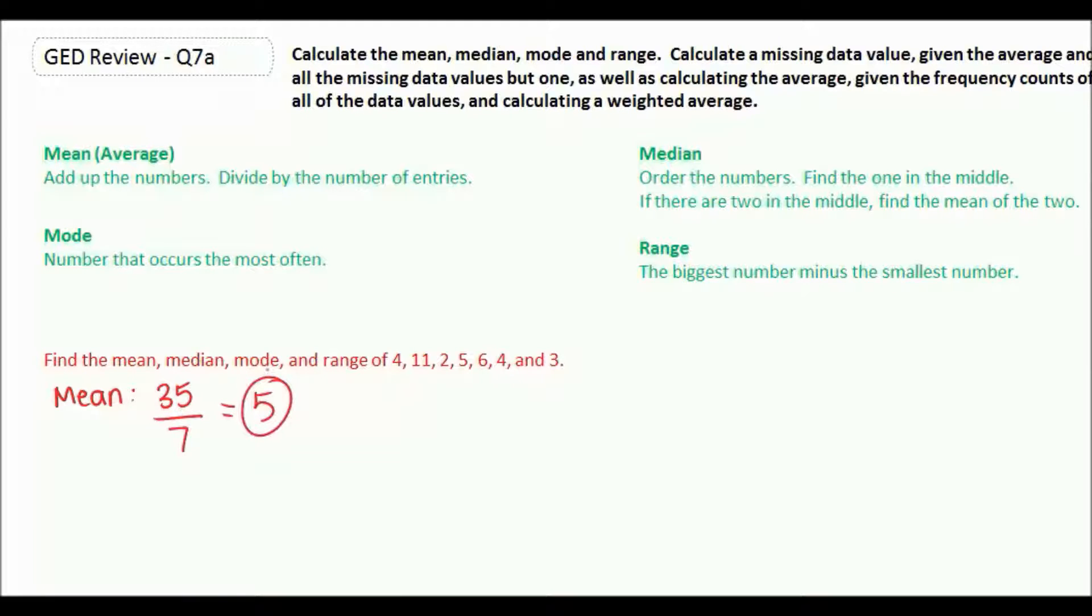For median, we're going to put our numbers in order. So our smallest number is 2, then 3, and 2 fours, then a 5, a 6, and 11. A lot of people like to cross numbers off.